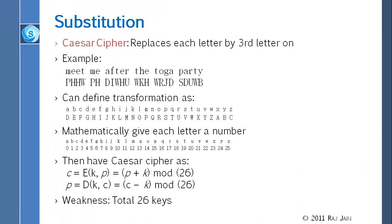The first method is substitution, which is simple and was invented 2,000 years ago — Caesar himself invented it. Basically, instead of sending a letter, you send the letter which is three positions later. So instead of M, you send P (M-N-O-P). Instead of E, you send H (E-F-G-H). So you skip two letters and send the third one. Mathematically, if we give each letter a number from 0 to 25, the ciphertext equals (plaintext + K) mod 26, where K is 3 in this example. The decryption algorithm is (C − K) mod 26.